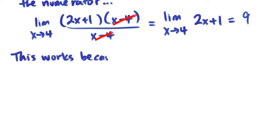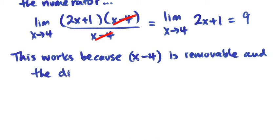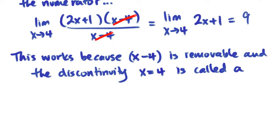because x minus 4, that factor, is removable. And the discontinuity that happens when x is equal to 4 is called a removable discontinuity.